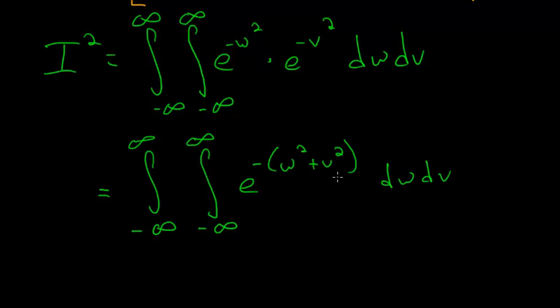And writing it this way makes it clear that we can make a substitution using polar coordinates. So if we say that r squared is the same thing as w squared plus v squared, and r dr d theta is the same thing as dw dv, we can rewrite this now in a much simpler form.